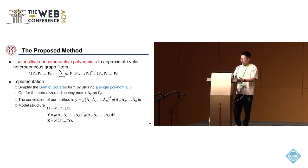So we propose a spectral heterogeneous graph convolution. It uses positive non-commutative polynomials to approximate valid heterogeneous graph filters. However, in practical implementation, learning multiple functions g_i is challenging.